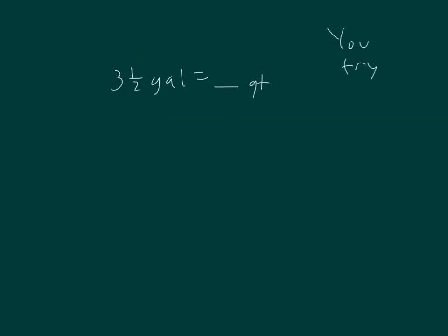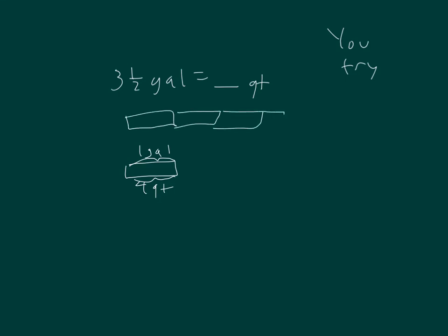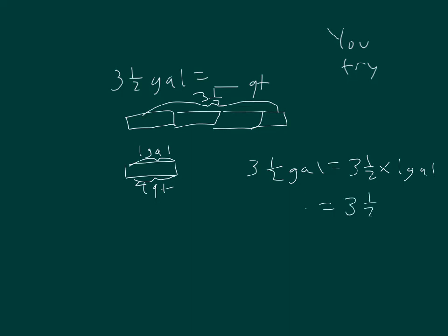You try: three and one-half gallons equals how many quarts? Be sure to use the information that one gallon equals four quarts. Three and a half: one, two, three, and one-half. Three and one-half gallons equals three and one-half times one gallon, and that one gallon equals four quarts. So that's three and a half times four quarts. As an improper fraction, three and a half is seven-halves times four quarts. Four becomes a two, two becomes one, so that's seven times two, which is fourteen quarts. Three and a half gallons equals fourteen quarts.